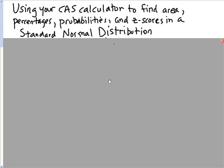Here's a video on using your CAS calculator to find area, percentages, probabilities, and z-scores in a standard normal distribution.